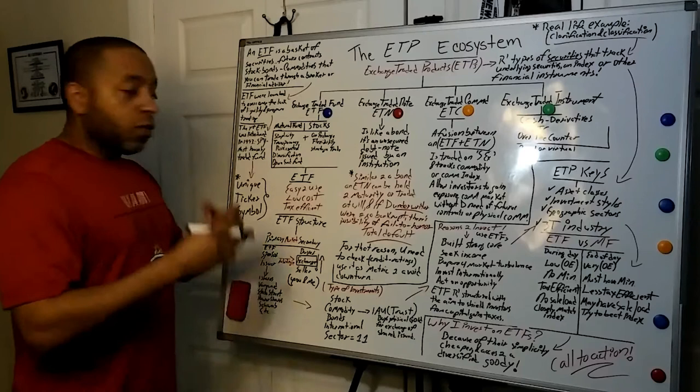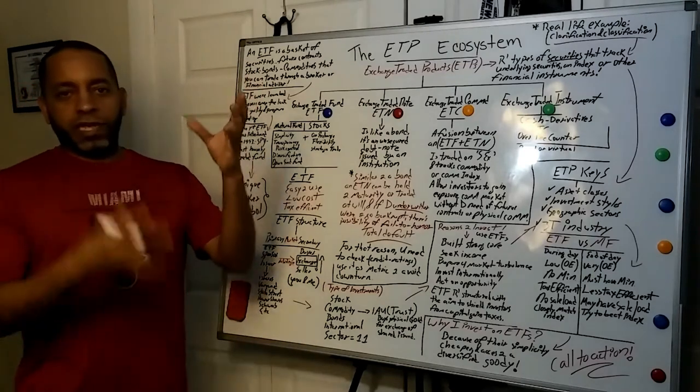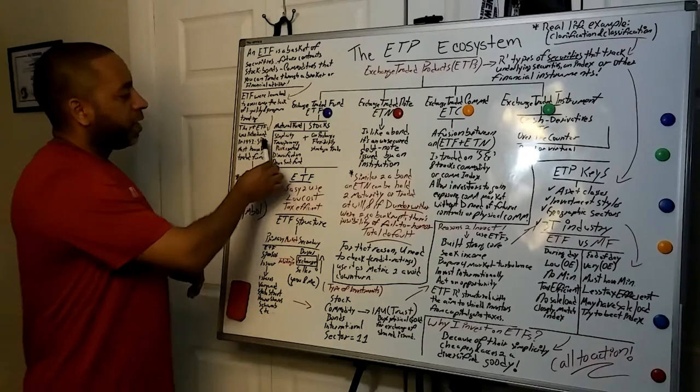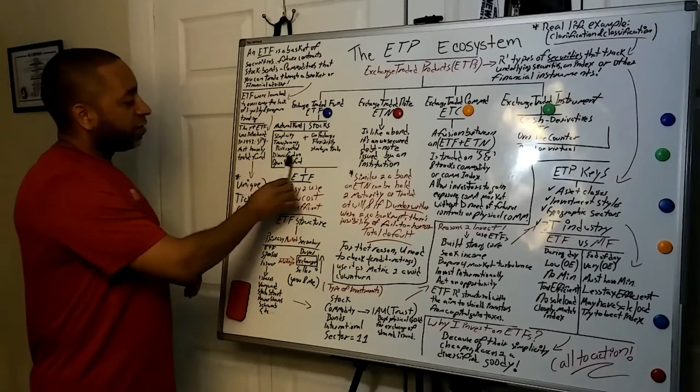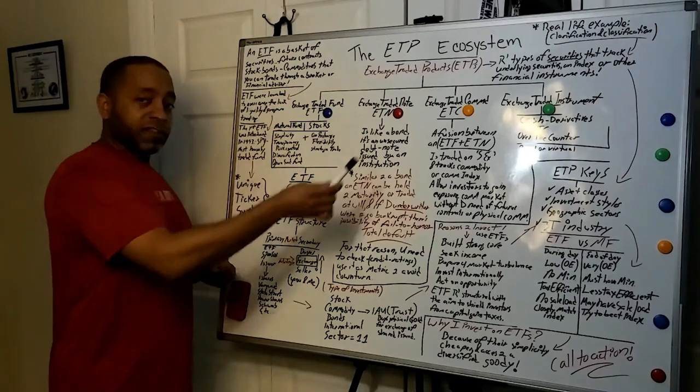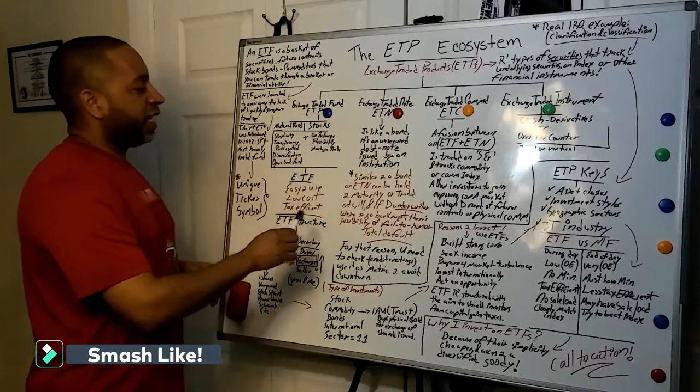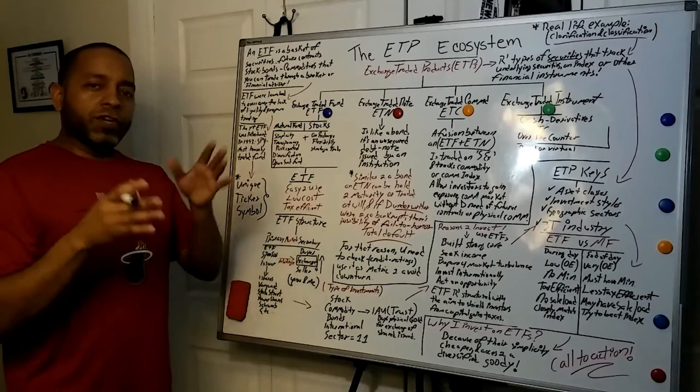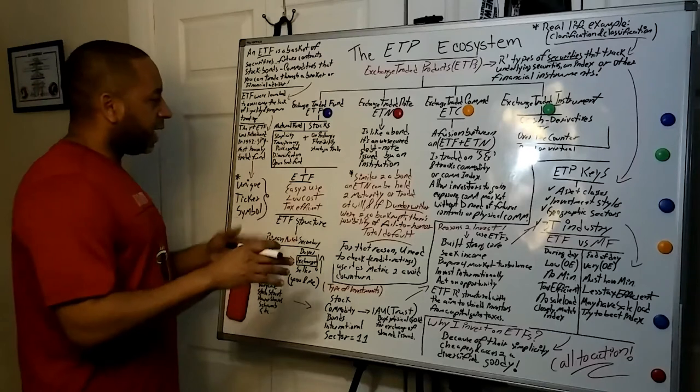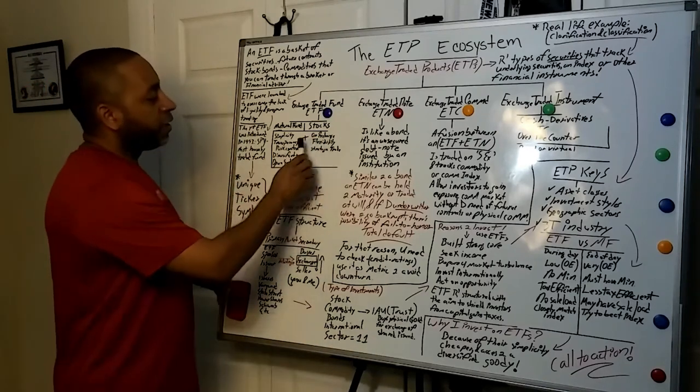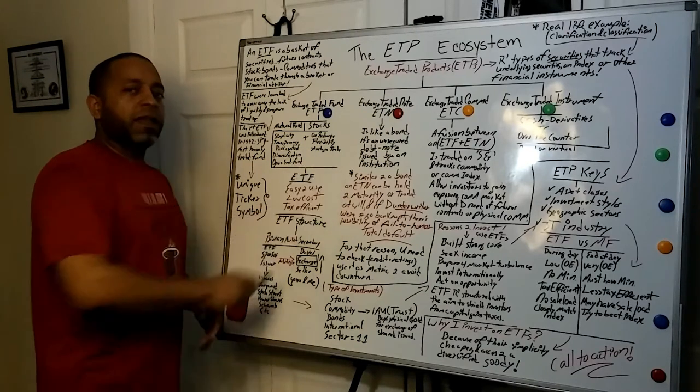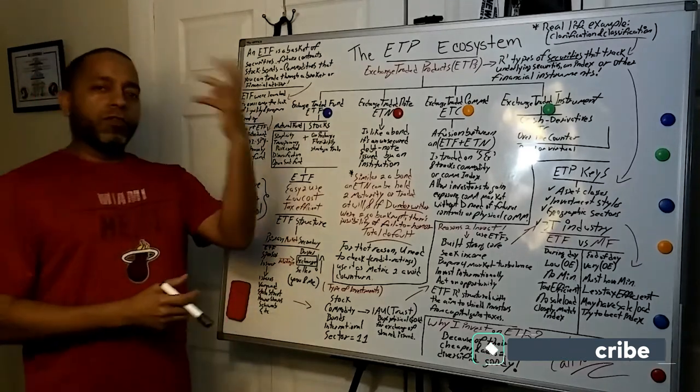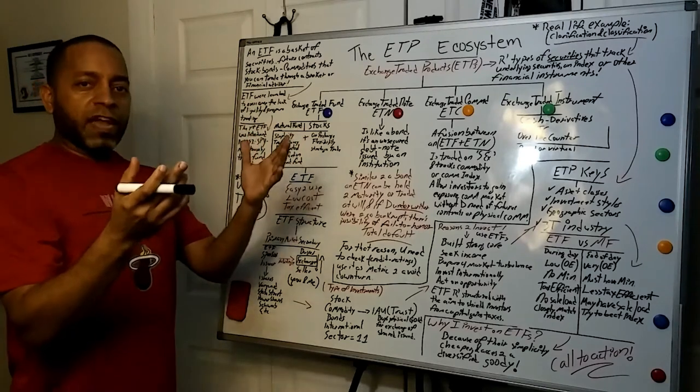Now, let's start here. Check it out. It's for a reason. Similar to a bond, an ETN can be held to maturity or traded at will. Now, if for some reason the underwriter were to go bankrupt, there's a possibility to fail to honor. Total default, guys. Keep an eye. Also, I want you to remember, fail to honor. Add that to your dictionary. Get your mind right, so we can start talking that same lingo, be on the same page.